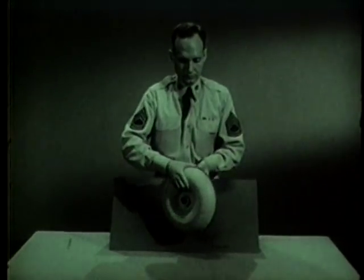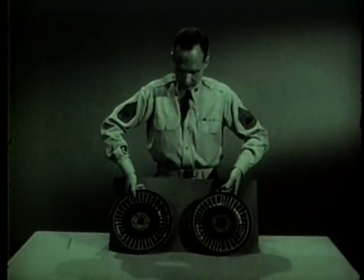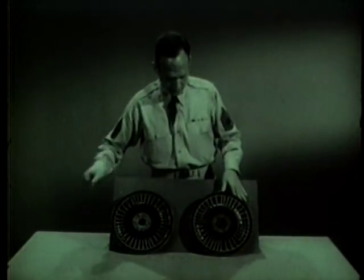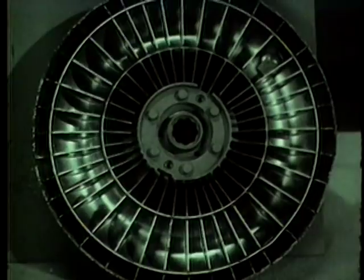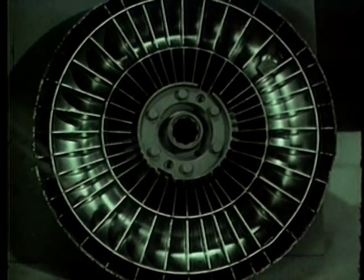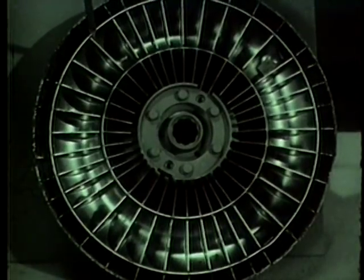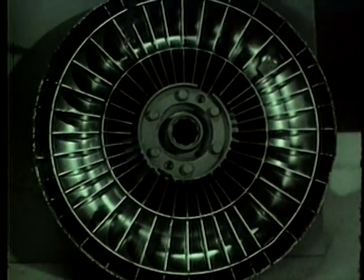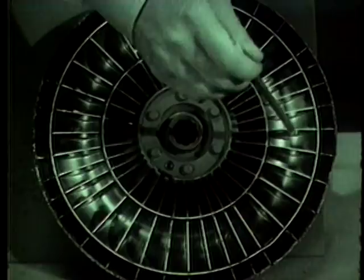Here's the actual fluid coupling, which has been disassembled so you can see inside. This is the driving member, which connects to the engine. It's called the pump and has straight vanes radiating from the center to the rim. Note the addition of this ring. Its purpose is to better control the flow of fluid within the pump to the driven member. For that reason, it is called the guide ring.